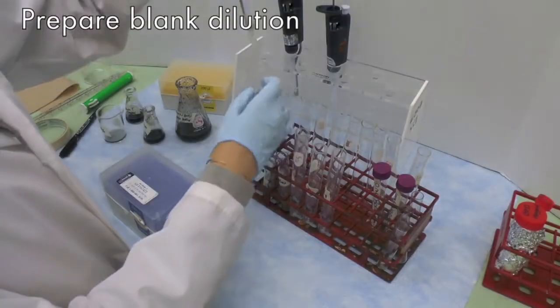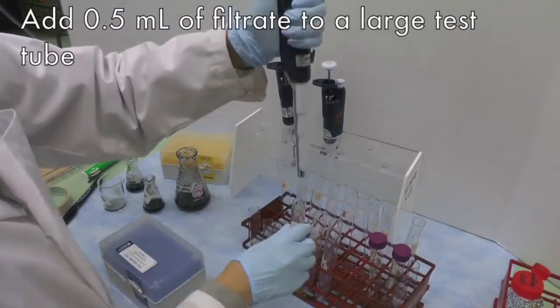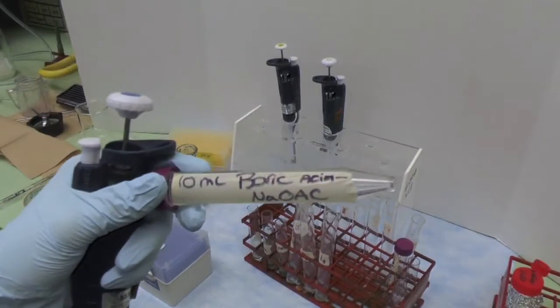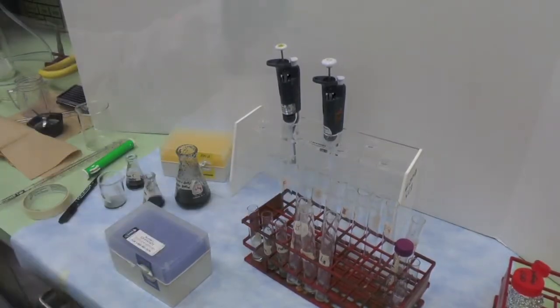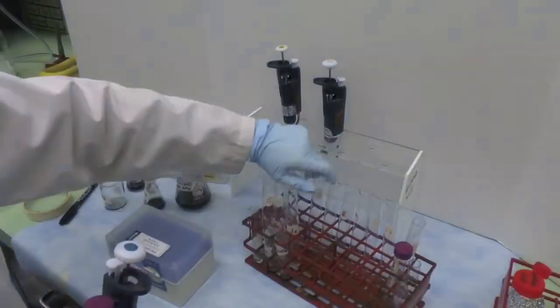To prepare the blank dilution, pipette 0.50 ml of each filtrate into a separate large test tube. Label clearly. Then add 0.50 ml of boric acid in sodium acetate solution into each of the large test tube. Wait for 10 minutes and vortex every 2 minutes.